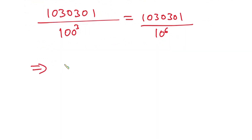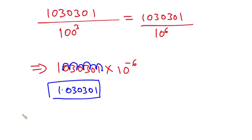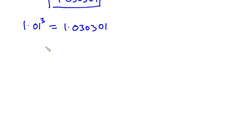This is also the same as 1,030,301 times 10⁻⁶. Since the question is in decimal form, I'll move the decimal point six steps to the left: one, two, three, four, five, six — giving us 1.030301. So 1.01 to the third power equals 1.030301.